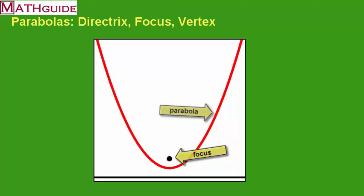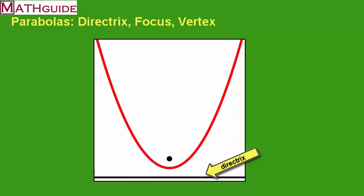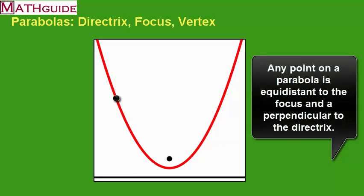This red curve itself is the parabola. And this black line down below is the directrix. Any point on the parabola is equidistant to the focus and a perpendicular drawn to the directrix.